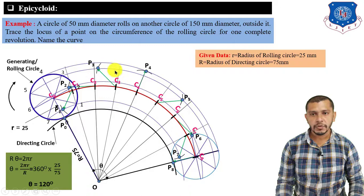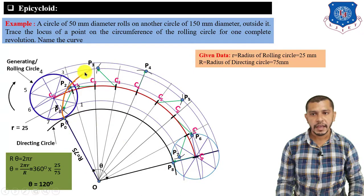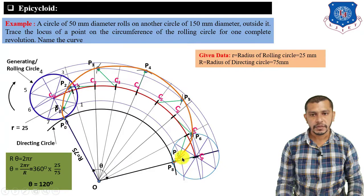Now draw the freehand curve passing through P0, P1, P2, P3, P4, P5, P6, P7, P8 — we get the epicycloid.